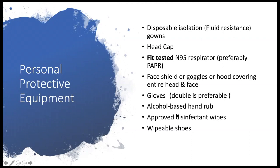Wear one glove below the gown, then pull the gown up, then put the other glove above the gown. This way the two pairs of gloves work as a valve to prevent any spillage or secretion leaking onto your skin. You should always have alcohol-based hand rub and disinfectant wipes. Also very important: have either proper shoe covers that cover the whole leg, or wipeable rubber shoes. In case of any spillage or contamination, regular shoes that cannot be wiped will become contaminated and can transmit infection outside the room.